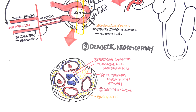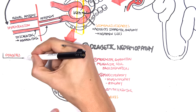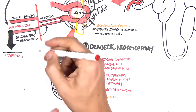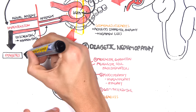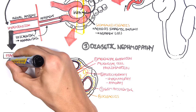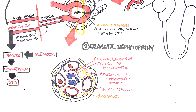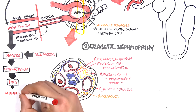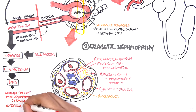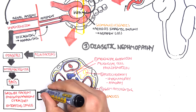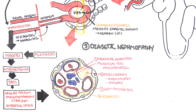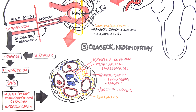Diabetes is a condition where you have high blood glucose, and people develop it due to risk factors including hypertension. High blood glucose leads to overproduction of reactive oxygen species. These ROS trigger a cascade of events, leading to activation and production of unnecessary growth factors, pro-inflammatory cytokines, and oxidative stress — all of which cause the four diabetic nephropathy changes we just discussed.